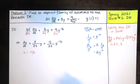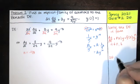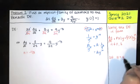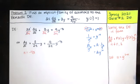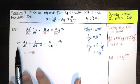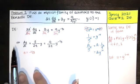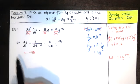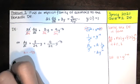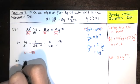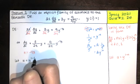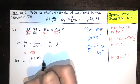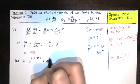It turns out that Bernoulli differential equations can be solved by a substitution, and that substitution is always this: we're going to let u equal y to the 1 minus n power. When we do that, we can multiply by an appropriate factor, and that will allow us to write the resulting equation as a first-order linear differential equation in the variable u. For our specific value of n, 1 minus negative one-third is 1 plus one-third, or four-thirds.